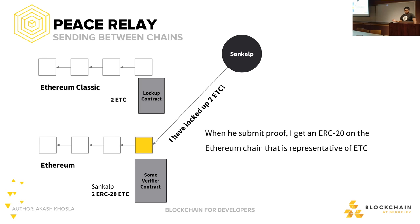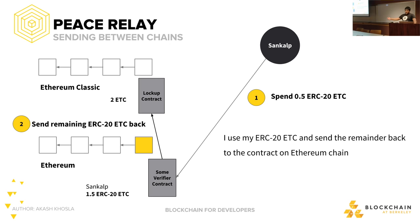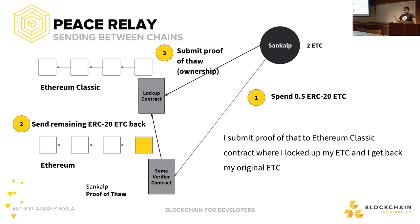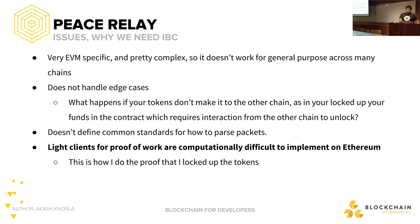There are contracts on Ethereum that accept ERC20 ETC as the payment token. When it's time to go back — say I spent 0.5 and have 1.5 ETC left on Ethereum — I burn my ERC20 ETC by sending it back to the contract on Ethereum. That emits another event, and I submit proof of that back to the contract on Ethereum Classic, which gives me back my original ETC tokens. Peace Relay was a fun summer project where we worked on it for about a week and didn't really touch it after that.